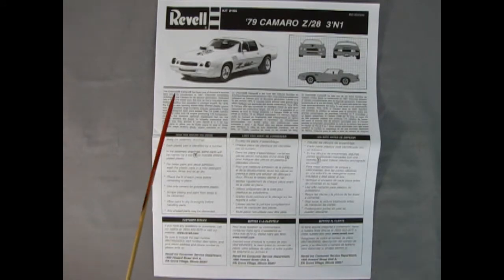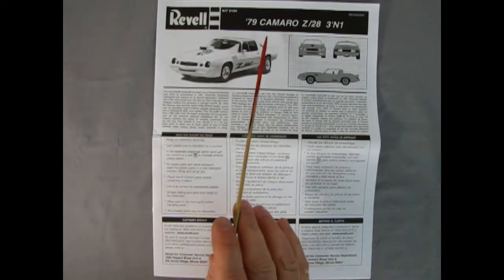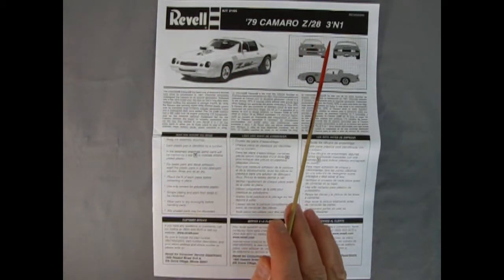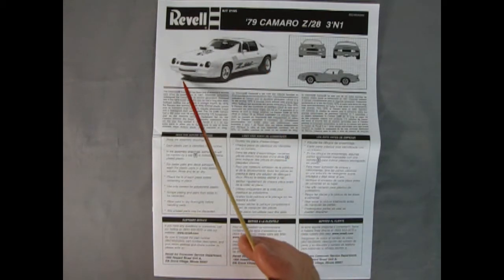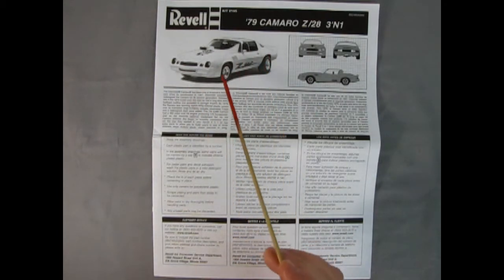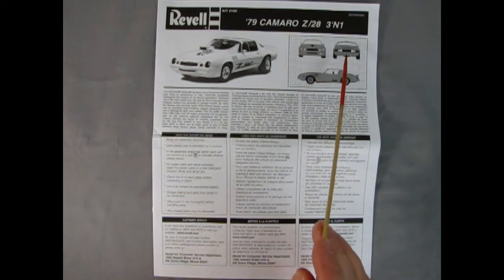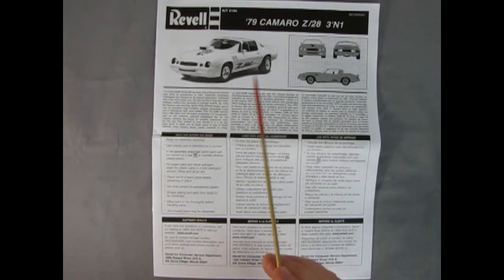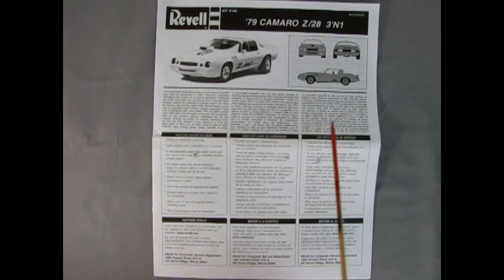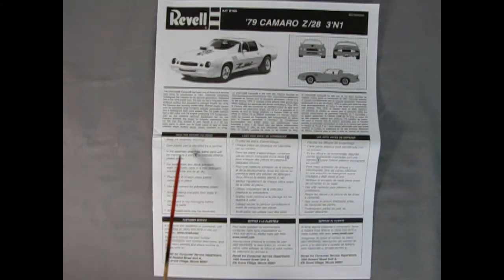Here is the instruction sheet for our Revell 1979 Camaro Z28 3-in-1 model kit. Here's the front three quarters of our street machine version as well as the side front and rear view of the stock version. And then we've got our history of the Camaro here in three different panels for the different languages. A box telling us all the things we need to build our model kit and the customer service number.